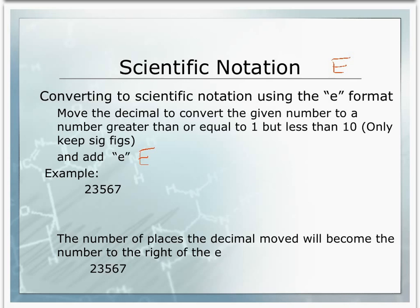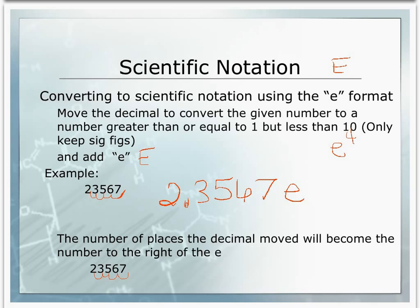Using the E format, we're going to start by moving our decimal to change our number to between a number greater than or equal to 1 but less than 10. We're going to keep only the sig figs, getting rid of any placekeeping zeros. To make the number between 1 and 10, our decimal will be between the 2 and the 3, and instead of writing times 10, we write E. We move the decimal 1, 2, 3, 4 places, so we write 4 next to the E on the right side. Numbers greater than 10 have a positive number to the right of the E; numbers less than 1 have a negative number to the right of the E.